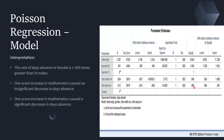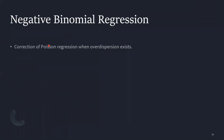Since the assumption of mean equal to variance was violated — over-dispersion exists — we should not rely solely on the Poisson regression results. We need to apply negative binomial regression, which will be covered in our next video.